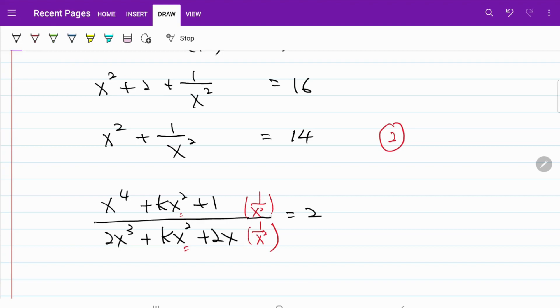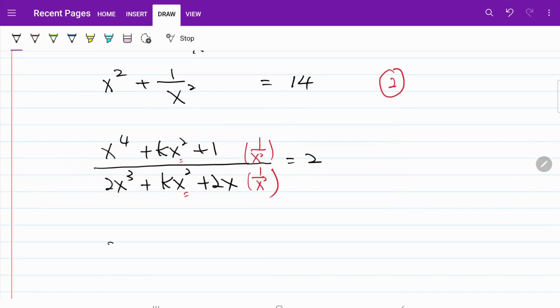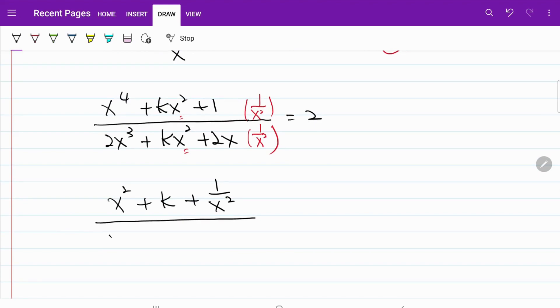If I multiply it by 1 over x squared, what I have now is x squared plus k plus 1 over x squared on the numerator, and on the denominator, I have 2x plus k plus 2 over x. And that's equal to 2.